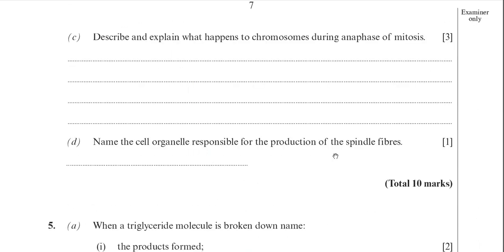Scrolling down to part C. You're asked to describe and explain what happens to chromosomes during anaphase of mitosis. Anaphase of course is where the sister chromatids are pulled to opposite poles of the cell. Now for that to happen you need the centromeres to split. And you need the spindle fibres to contract and shorten. And that's basically all that happens during anaphase.